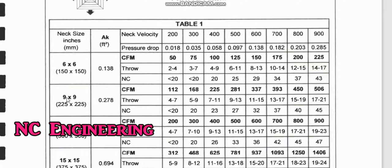We can only go up to NC 30, so the 6x6 is not applicable. Let us go for the next size: 9 by 9 inch. For 225 CFM, the velocity is 400, which is less than 600, and the NC level is 23. So we will select the diffuser of size 9 by 9 inch for the CFM of 225.